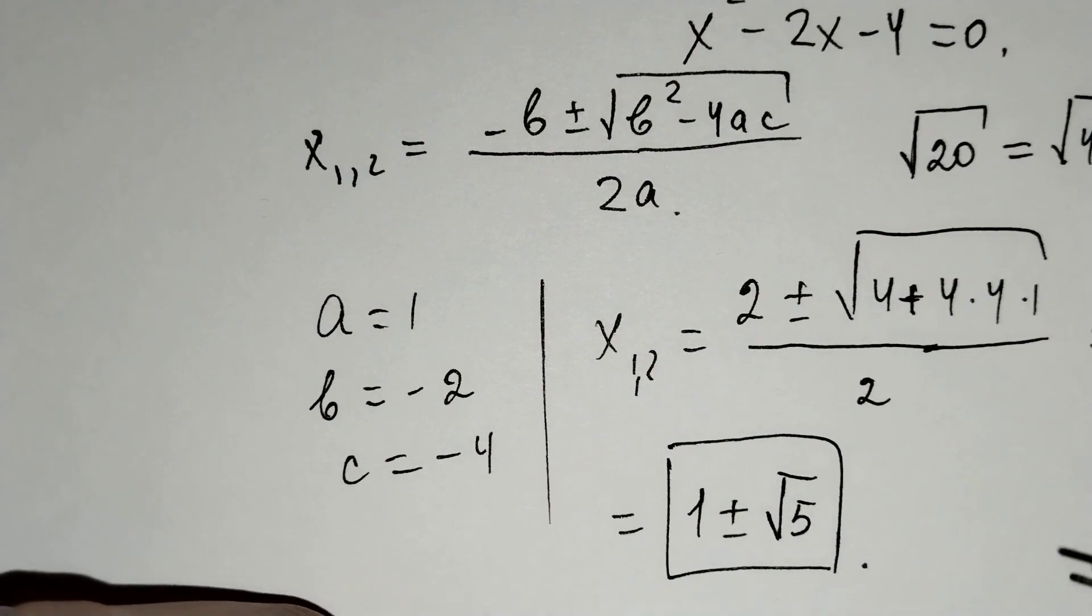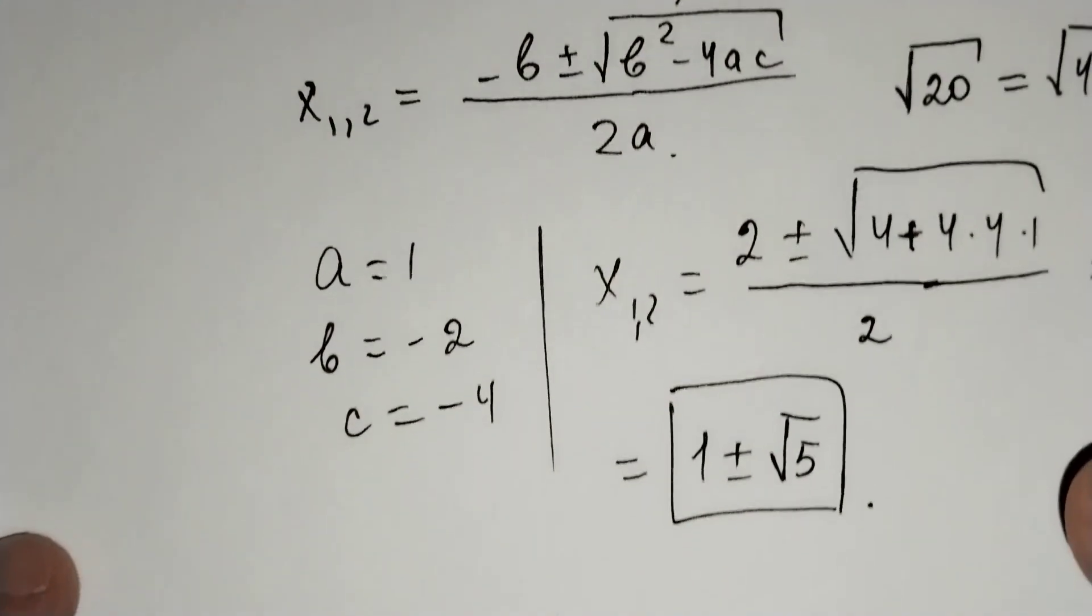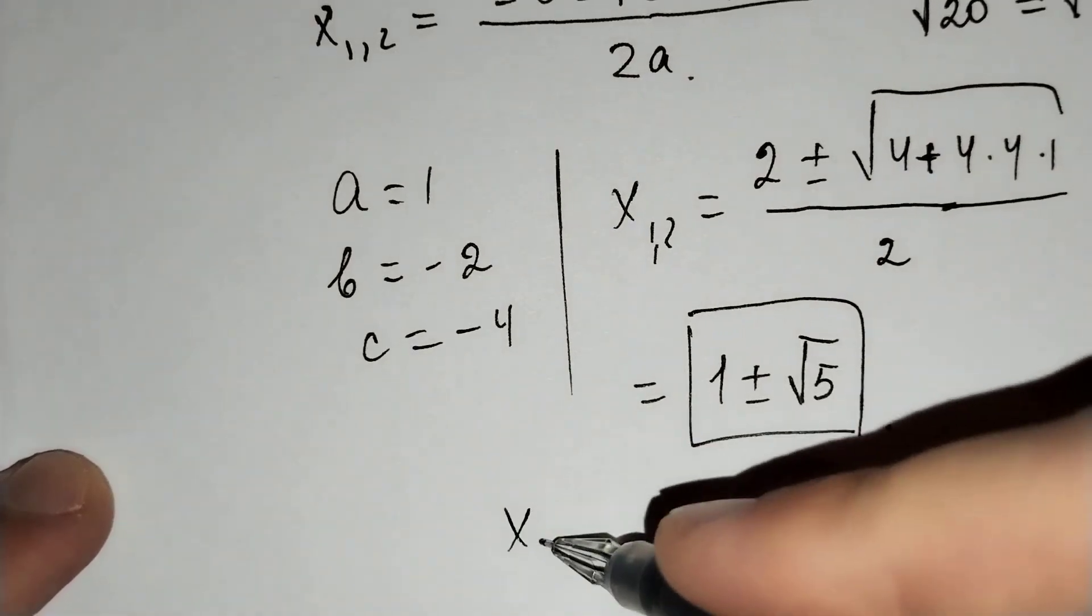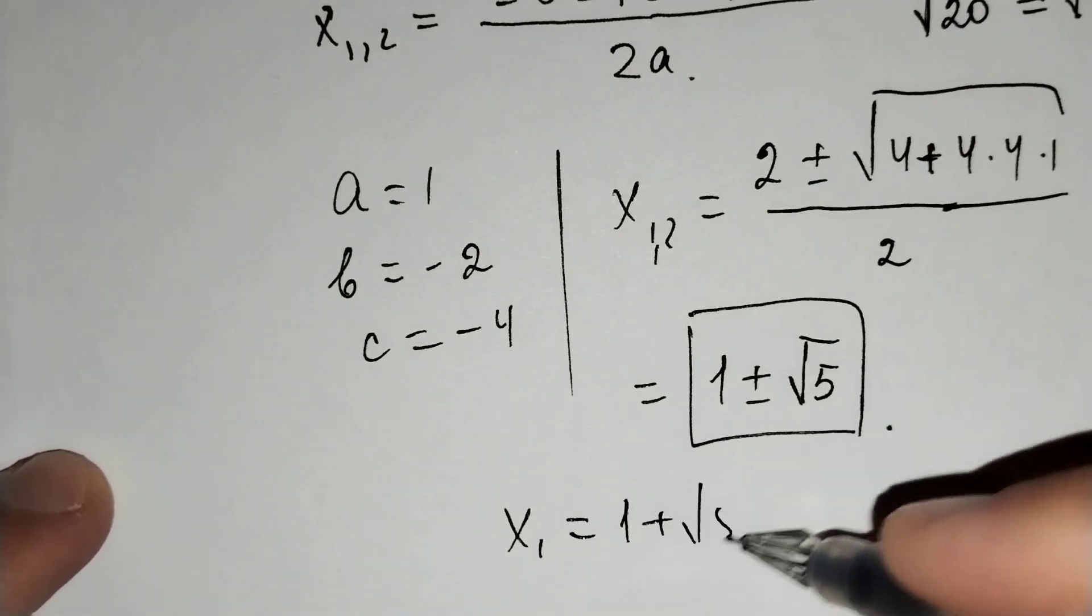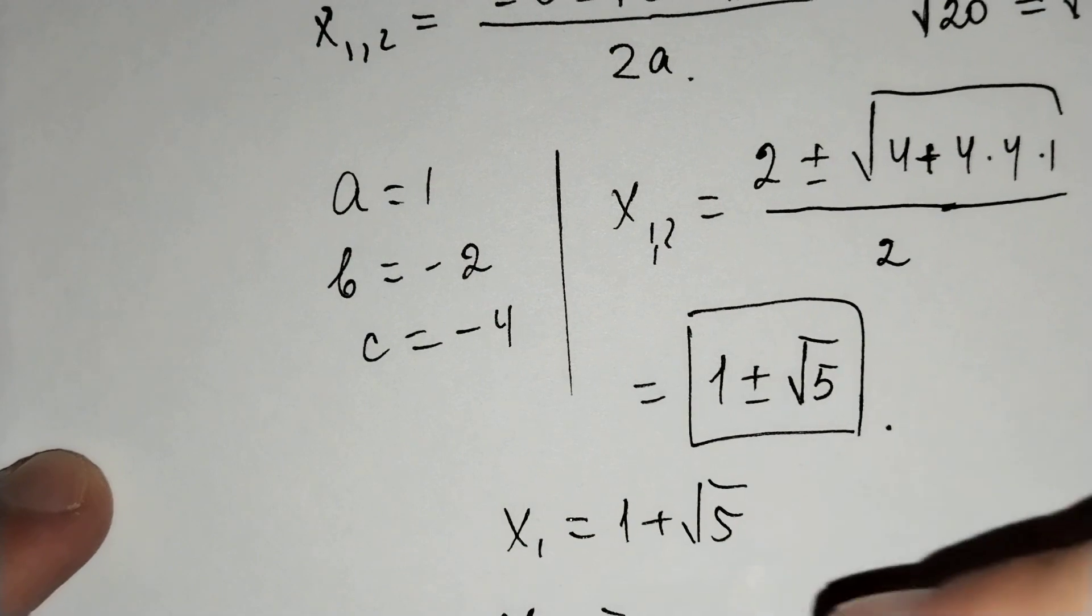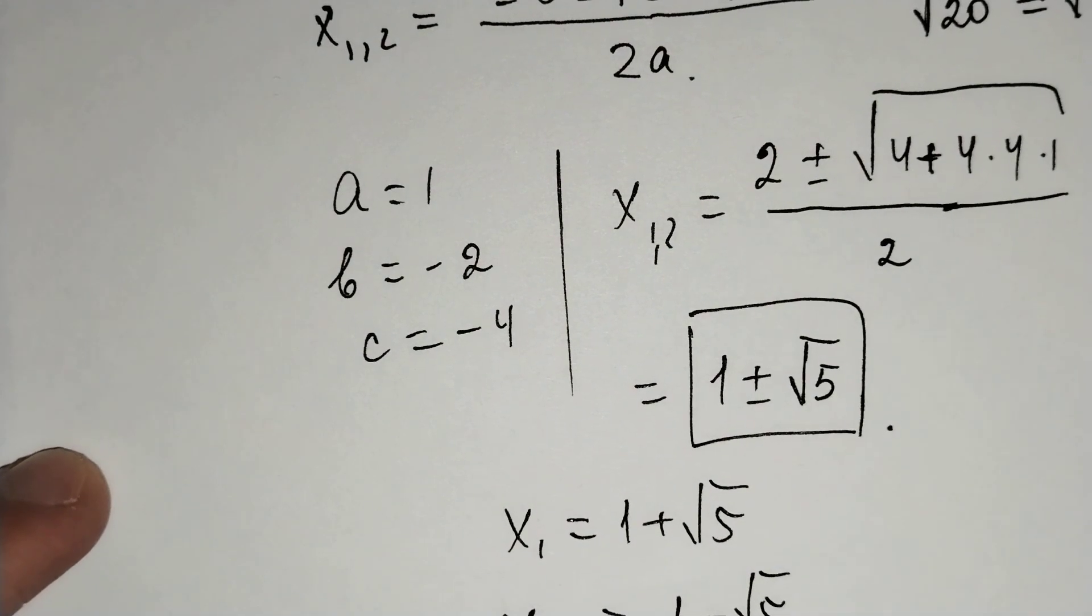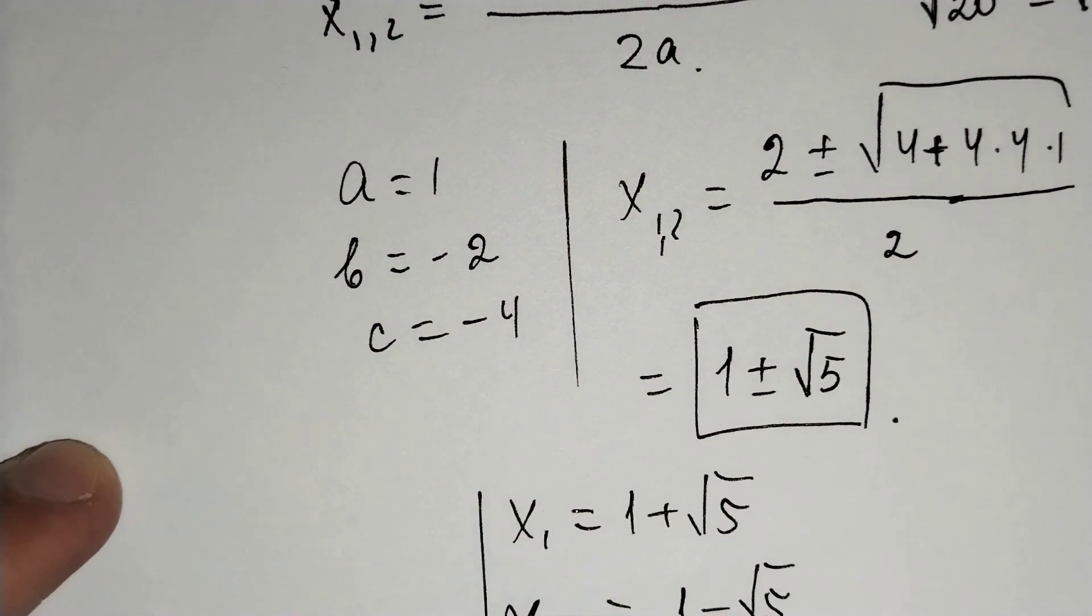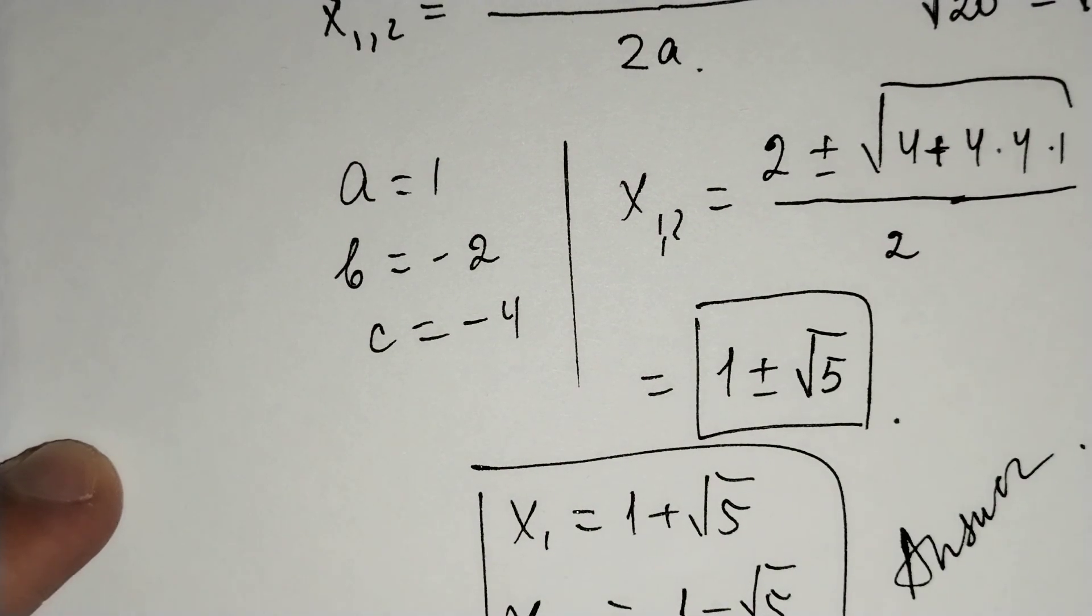This is our x1 and x2. x1 equals 1 plus the square root of 5, and x2 equals 1 minus square root of 5. This is our answer. Thanks for watching.